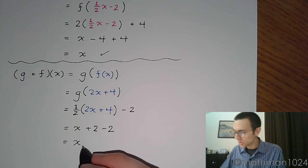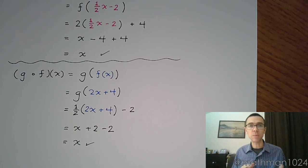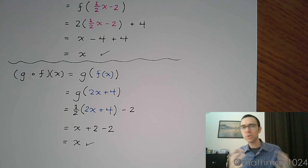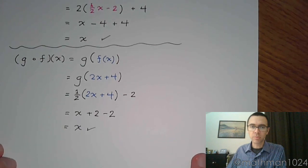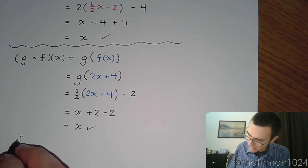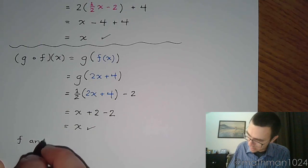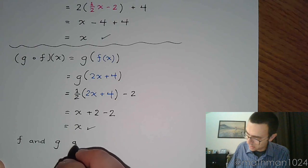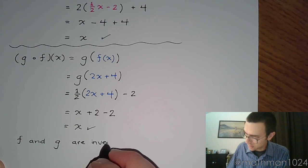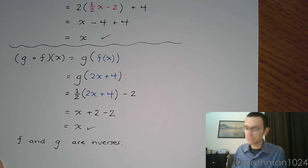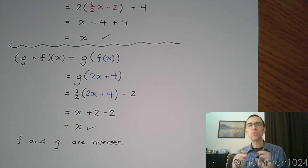So it doesn't matter which way we do the function composition here. These functions will undo what the other guy does. So we have shown that f and g are inverses. Now in the next video, we're going to see what happens when we look at their graphs. How do graphs of inverses relate to each other?